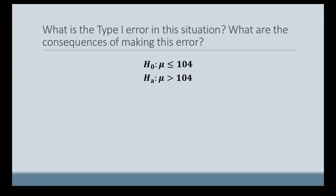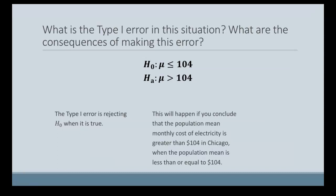So what would a Type I error in this situation be? Well, a Type I error is when we reject the null hypothesis when it's true. So this would happen if you said that the population mean monthly cost of electricity is greater than $104 in Chicago when truly the population mean is less than or equal to $104.